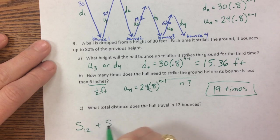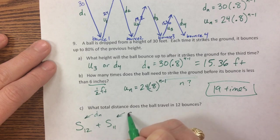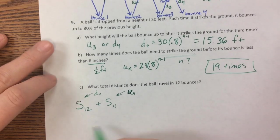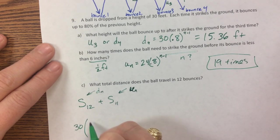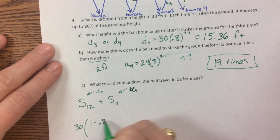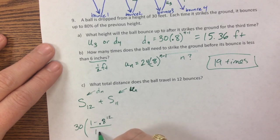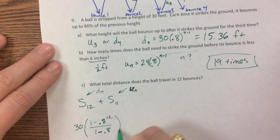Where this one is d_n and this one is u_n. So then that becomes 30 times 1 minus 0.8 to the 12 over 1 minus 0.8 plus, the next one was 24, was the first term. And I need to figure out that value.